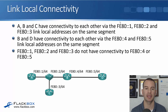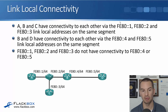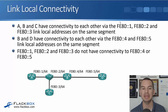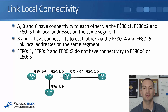In the example diagram, we've got routers A, B, and C, all connected to the same network segment through a switch on the left. On that segment, router A has been assigned FE80::1/64 as its Link Local address, router B is FE80::2, and router C is FE80::3. There's also another link between routers B and D. B has FE80::4 and D has FE80::5 on that link.